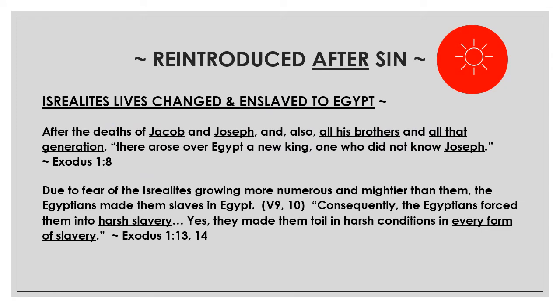Reintroduced after sin. The Israelites' lives had changed significantly, and they were eventually enslaved in Egypt. That happened after the deaths of Jacob and Joseph, his brothers, and all of that generation. Exodus 1:8 tells us there arose over Egypt a new king — one who did not know Joseph. Scholars believe that was Ramses II. Due to fear of the Israelites growing more numerous and mightier than them, the Egyptians made them slaves. They made them toil in harsh conditions in every form of slavery — Exodus 1:13-14.